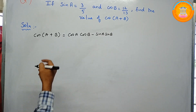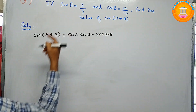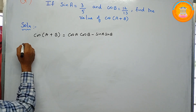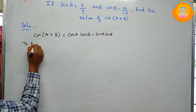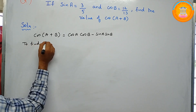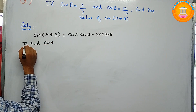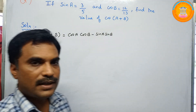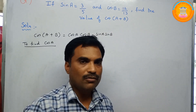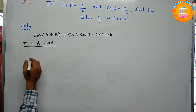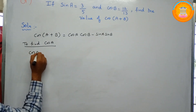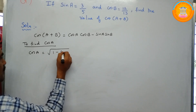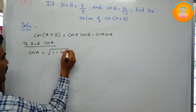First we will find the value of cos a, since they have given sin a. To find cos a, we know that cos squared a plus sin squared a equals 1. Using that result, we can write cos a as the square root of 1 minus sin squared a.